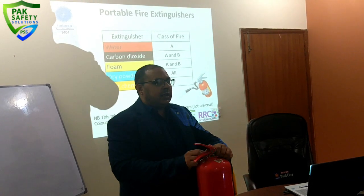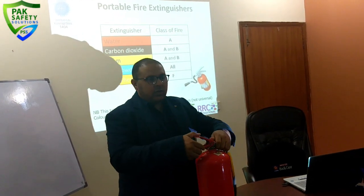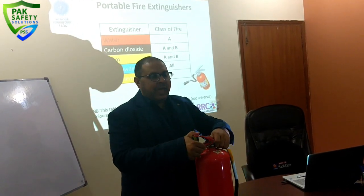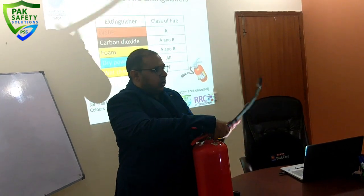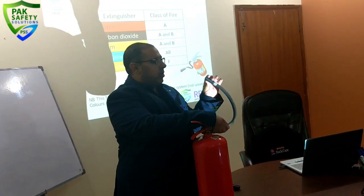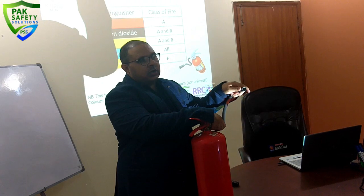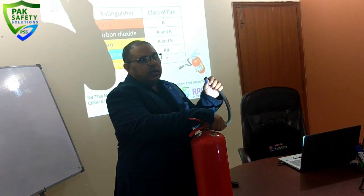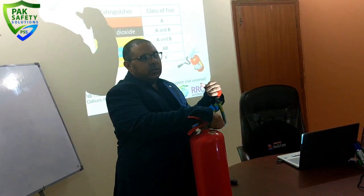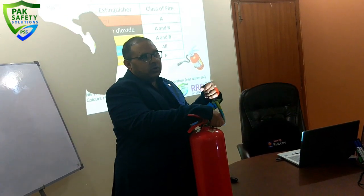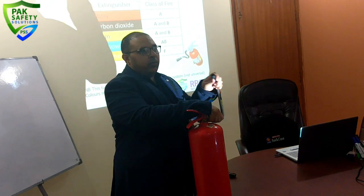The gauge should be on the green area. Then we can verify the lever is not damaged. We can make sure the discharge hose is okay, and that the nozzle is not covered with spider webs or any other blockage.